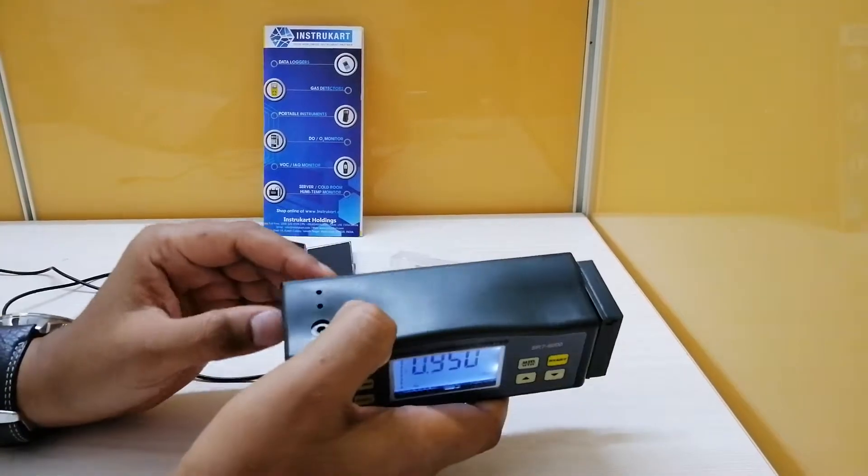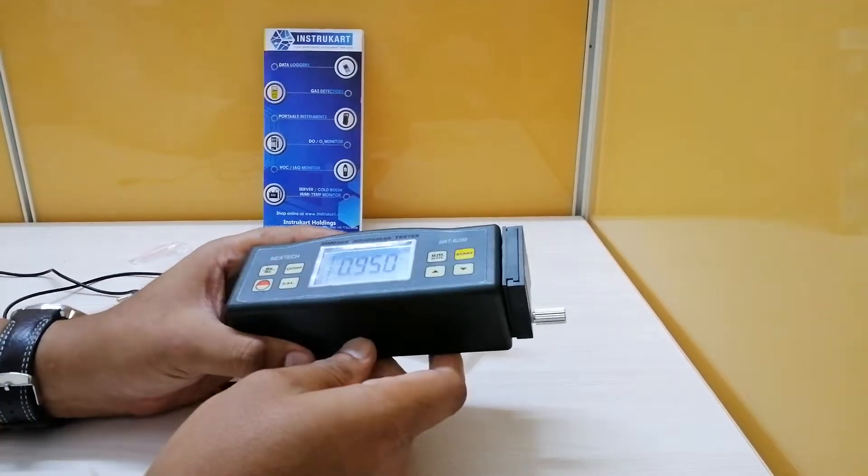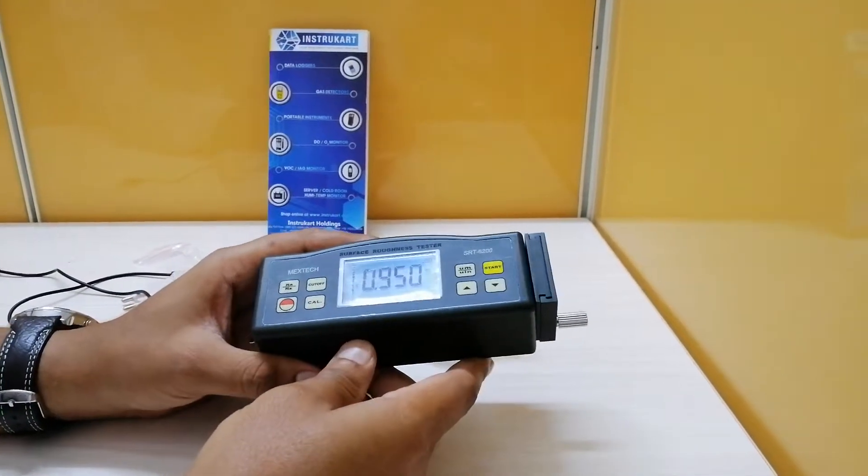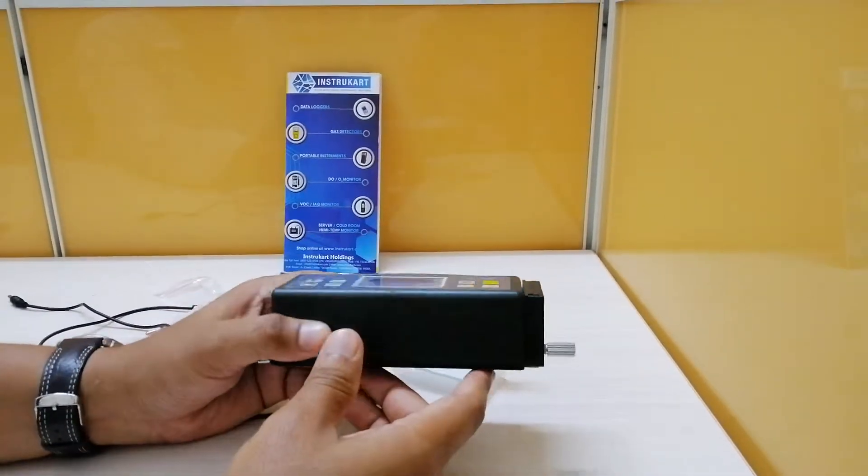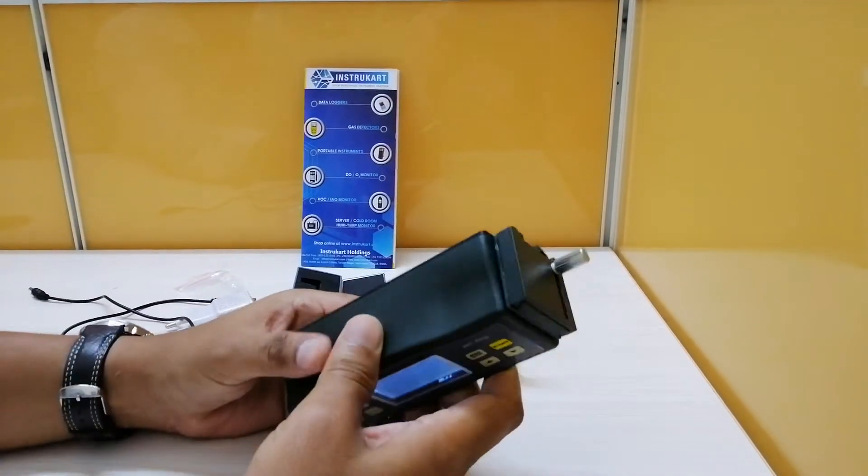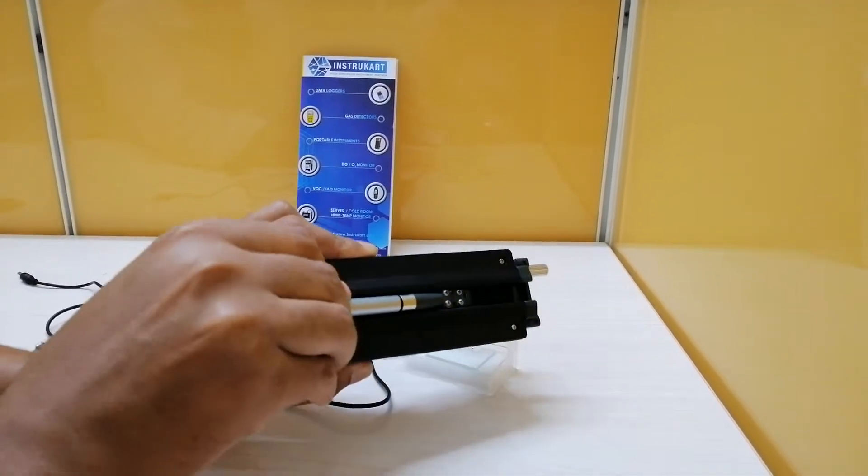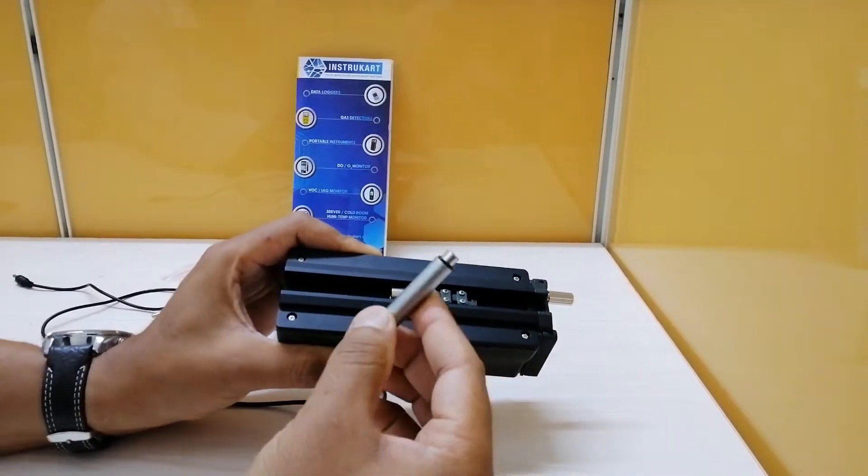The accuracy for this device has been claimed to be plus or minus 10% of the full screen, and the fluctuation of the display value is not more than 6%. The sensor, which you can see here, is an induction type.